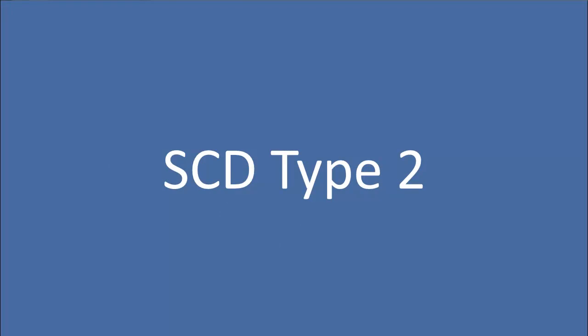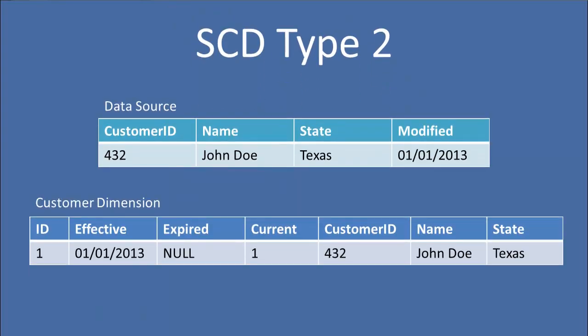So what if we need to actually keep track of those historical values? Well, that's where the SCD type 2 comes in. Again, using the same data source on top, we have John Doe in Texas. But now we have a modified date in our source — let's say this record was created or updated on January 1st, 2013. In our dimension, we're going to add a few fields: effective, expired, and current. The effective field keeps track of the date that the dimension record became effective — in this case, January 1st, 2013. Notice that our customer ID 432 has two attributes that match the source: John Doe in Texas.